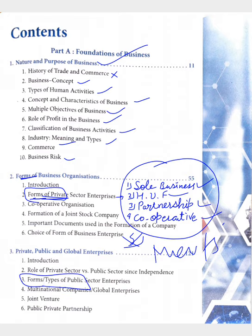So in the second unit we discussed private forms, and in the third unit we discussed public — meaning government — the types of government companies. You have to learn all these forms: multinational companies, joint venture, and public-private partnership.